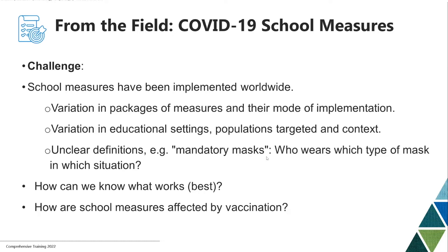There has been much variation in the packages employed and in the way they have been implemented. We also have much inherent variation in education settings within countries — think of the distinction between primary schools and secondary schools. We have many different populations within and surrounding the school setting: students, teachers, headmasters, other school staff, but also the wider family and community environment. And we have much variation in the geographical, social-cultural, and political context surrounding educational settings.